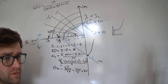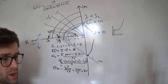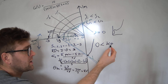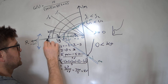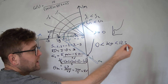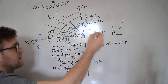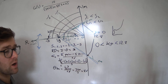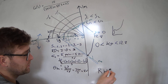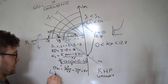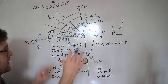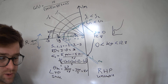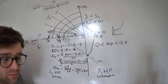Using Routh-Hurwitz, get the closed loop transfer function keeping Kp as a variable, then apply the stability criteria. For this question the result is that Kp must be greater than zero and less than 12.8. A Kp of 12.8 places the poles on the imaginary axis; greater than 12.8 moves poles into the right half of the s-plane, making the system unstable. The left half plane is where poles must be for a stable system.